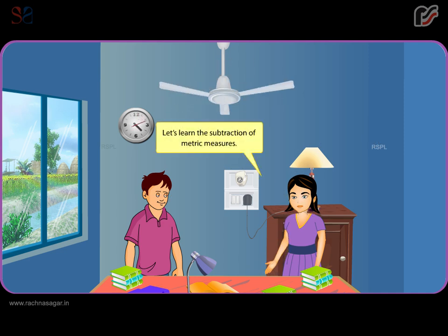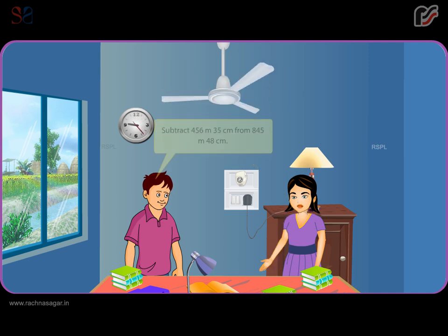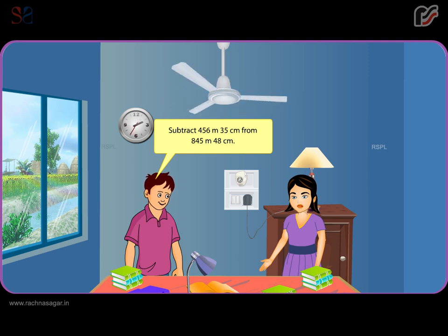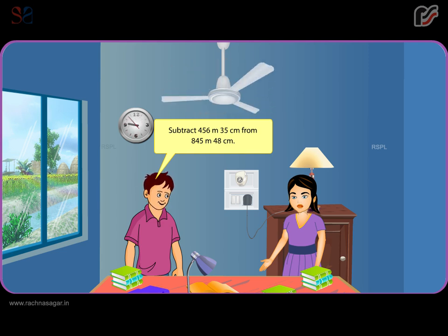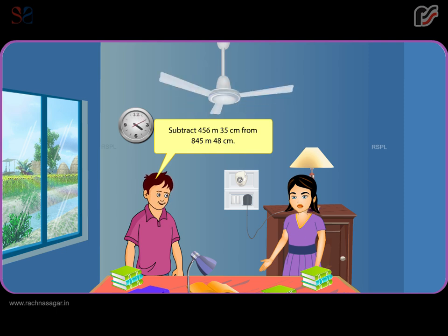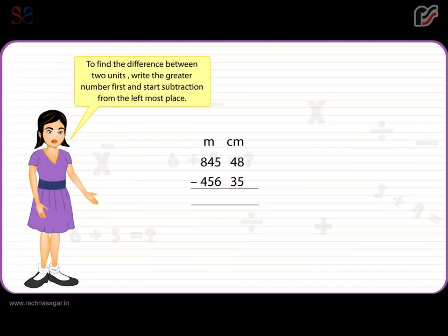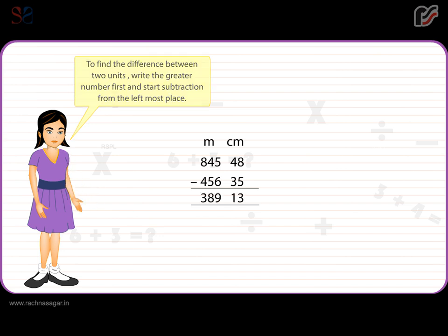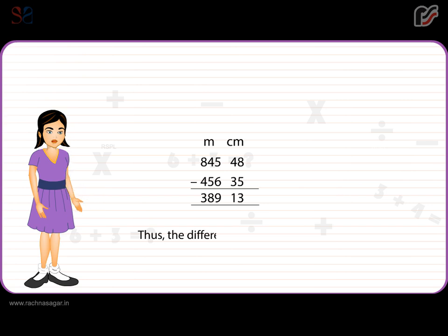Let's learn the subtraction of metric measures. Subtract 456 meters 35 centimeters from 845 meters 48 centimeters. Write the greater number first and start subtraction from the leftmost place. The difference is 389 meters 13 centimeters.